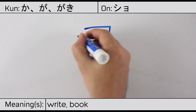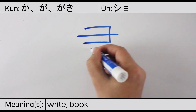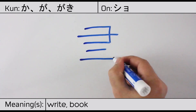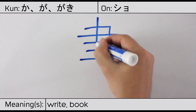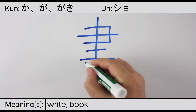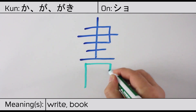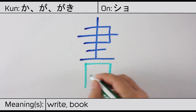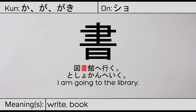This character is made up of the following radicals or parts: the brush radical at the top, followed by the san or day kanji at the bottom. You can remember this kanji by the following hint: using a writing brush in a sunlit place. Our example sentence is: 図書館へ行く — I'm going to the library.